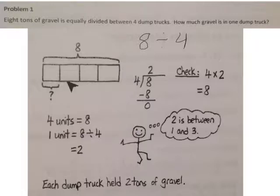So we know that four units equals eight. We want to know what one unit would equal. One unit would be eight divided by four, and eight divided by four is two. So each dump truck held two tons of gravel.